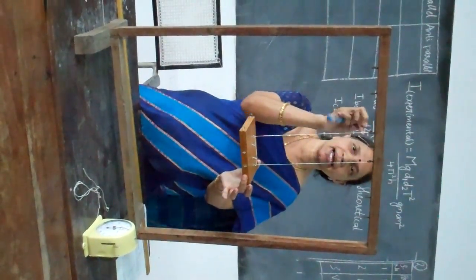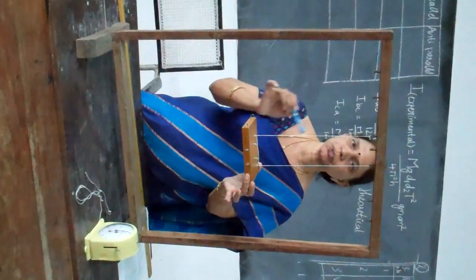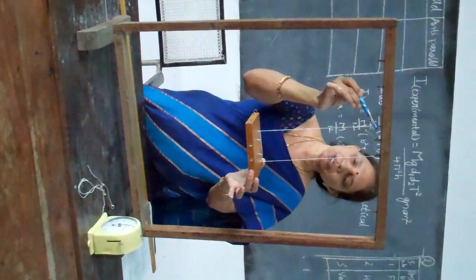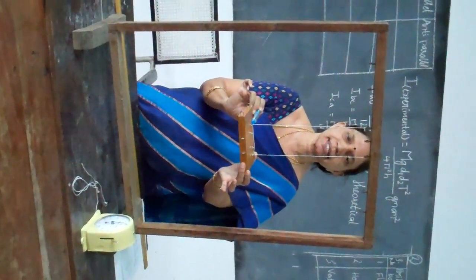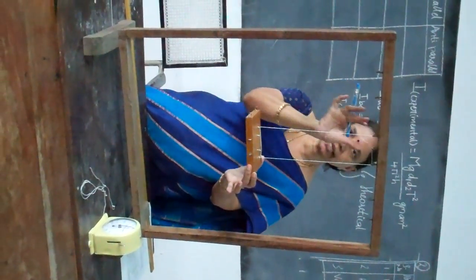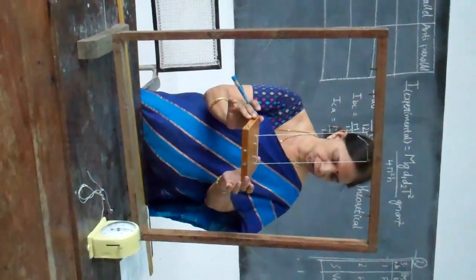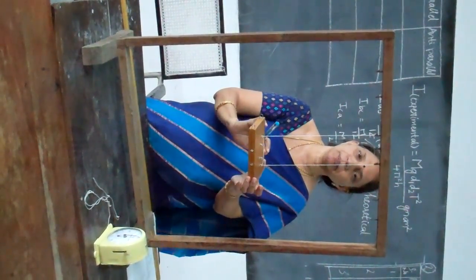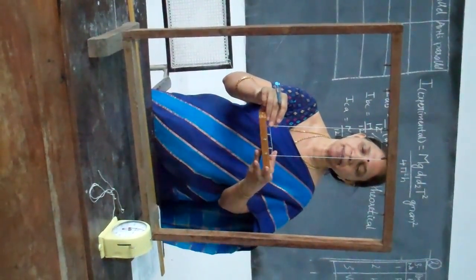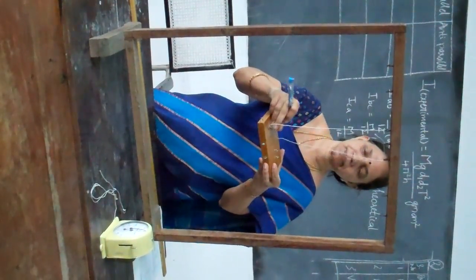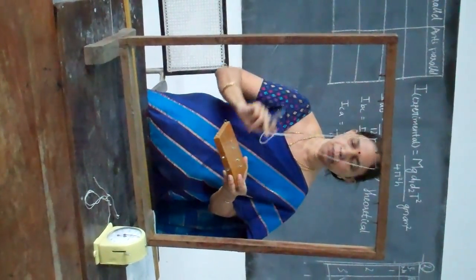Measure the distance between the two screws on top as 2d1, and this distance as 2d2. The point of suspension to the point here is your height h. Make sure that h is the same on either side so that it will be stable. Then using the formula, measure the moment of inertia, and repeat this experiment for the other two planes.